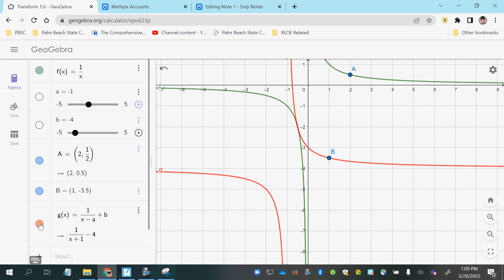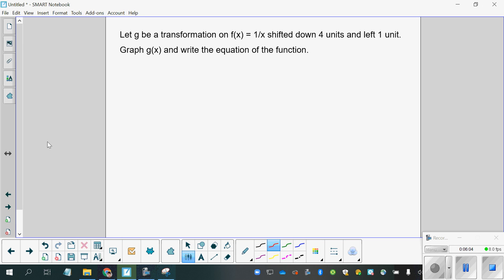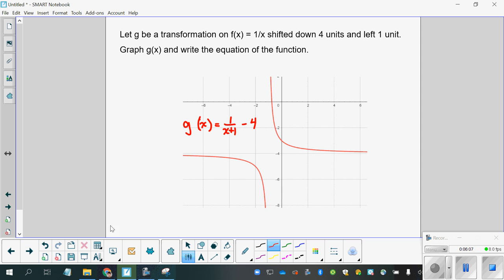So the finished product looks like this, and I've got it right here for us, it's written out more explicitly. The function g(x), the equation is 1 over the quantity x plus 1 minus 4, and here is what the finished product looks like when graphed.